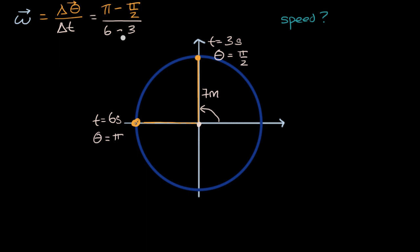And so we are going to get, in the numerator, we have been rotated in the positive direction, pi over two radians. Because it's positive, we know it's counterclockwise. And that happened over three seconds. And so we could rewrite this as, this is going to be equal to pi over six.